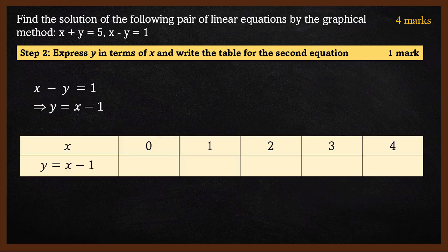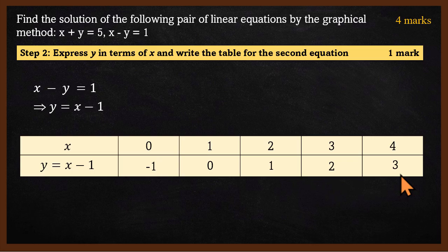We build the table for the second equation using y equals x minus 1, with x values from 0 to 4. When x is 0, y is minus 1. When x is 1, y is 0. When x is 2, y is 1. We pick two points: (1, 0) and (2, 1).